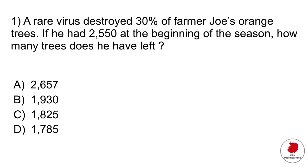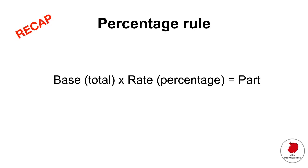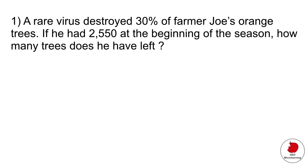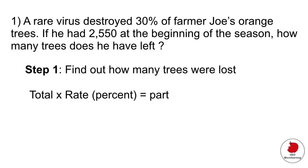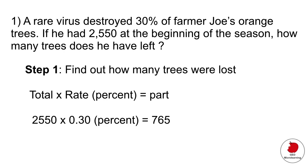What you have to do is remember the percentage rule, which says that the total multiplied by the percentage or the rate gives you the part. So going back to our problem, first find out how many trees were lost. Plug your numbers in: 2,550 times 30% gives you 765 trees lost.